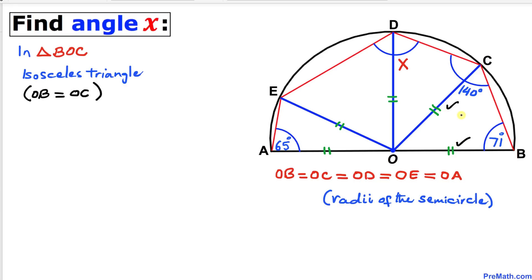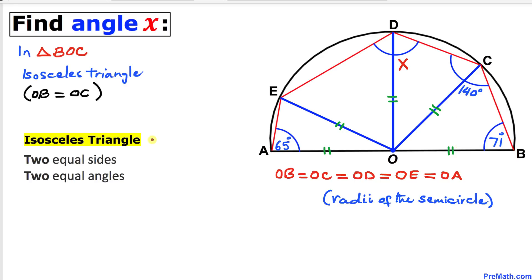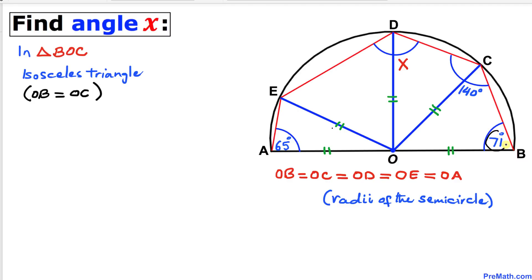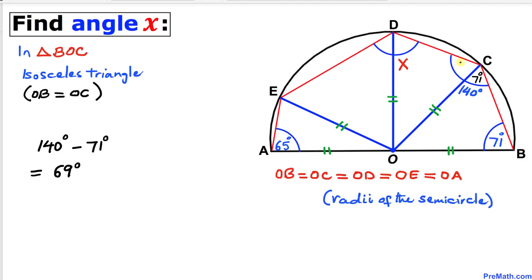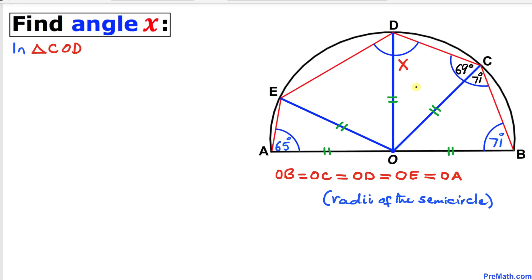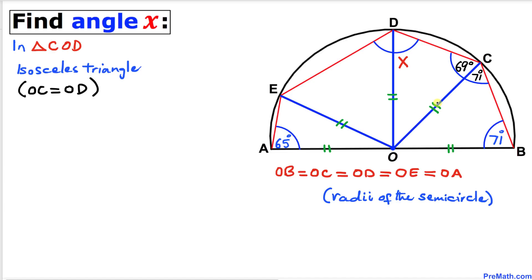Triangle BOC is an isosceles triangle since OB equals OC, both being radii of the circle. By the definition of an isosceles triangle — a triangle with two equal sides has two equal angles — this angle has to equal this angle, making it 71 degrees as well. Since the whole angle C is 140 degrees, we subtract: 140 minus 71 equals 69 degrees.